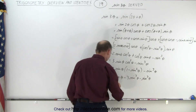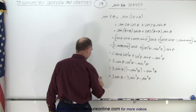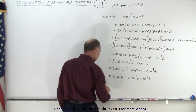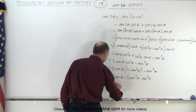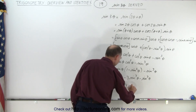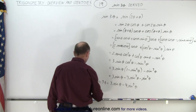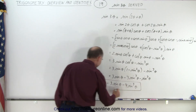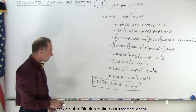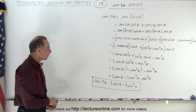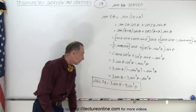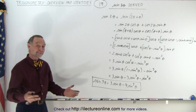So when we do that we get 3 times the sine of theta minus 3 times the sine cubed of theta, and then combining like terms we can say that the sine of 3 theta equals 3 times the sine of theta minus 4 times the sine cubed of theta. That is how we find the identity of the sine of 3 times an angle: 3 times the sine of the angle minus 4 times the sine cubed of the angle. This has reduced from a triple angle to a single angle identity, and that is how it's done.